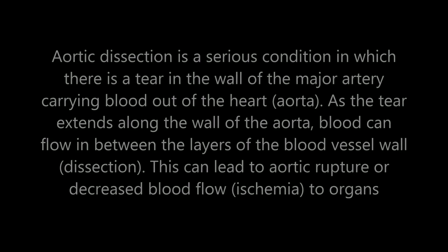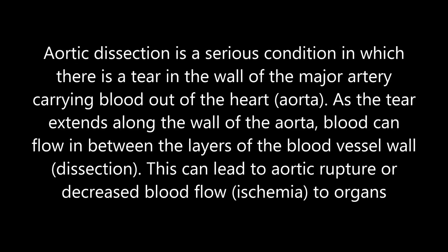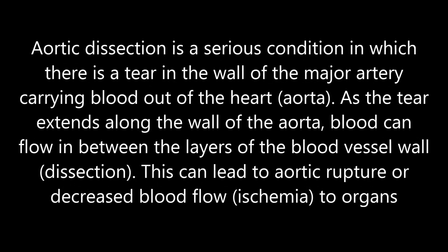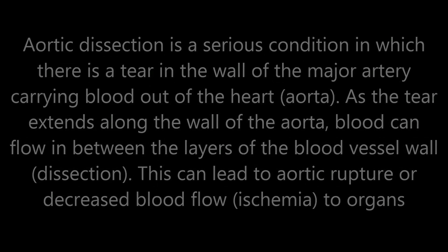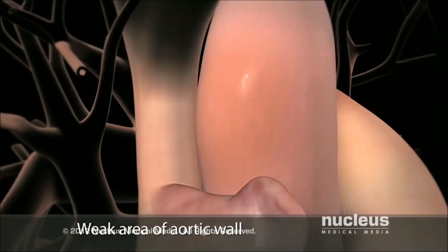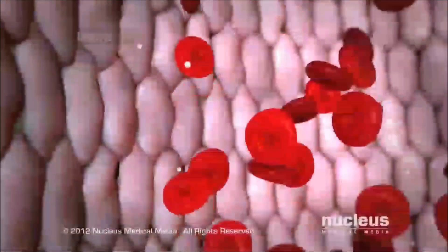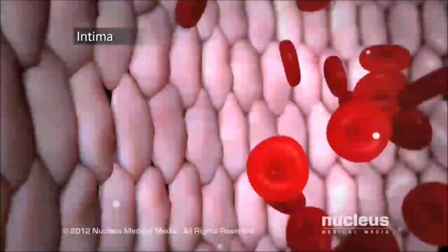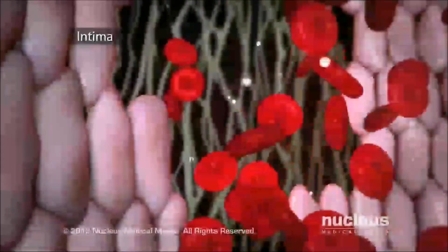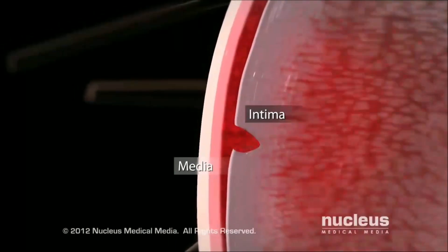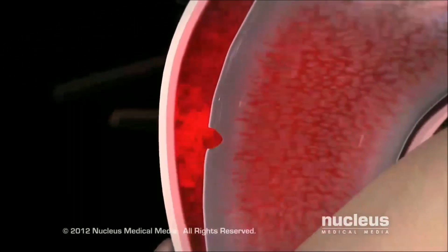This is a condition called aortic dissection, which may or may not occur within an aneurysm. Most commonly, aortic dissection begins with damage to the intima layer. Blood moves through the break in the intima, separating it from the media, causing bleeding inside the wall of your aorta.